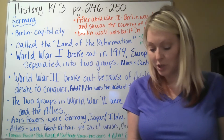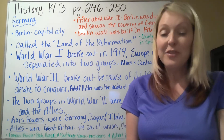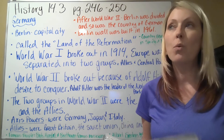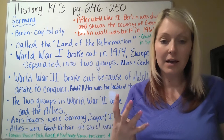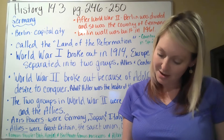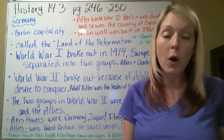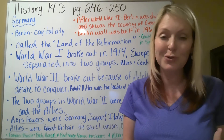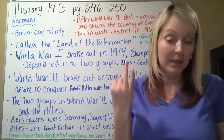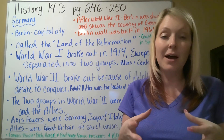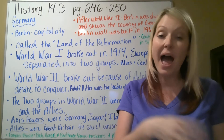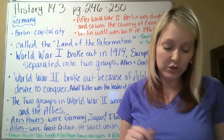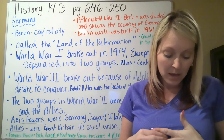An interesting fact about Germany: the Black Forest is a forest in Germany, and it was the imaginary home setting for some famous children's stories — Hansel and Gretel, Little Red Riding Hood, and Snow White. Those forest stories all came from the Black Forest in Germany, written by the German brothers Jacob and Wilhelm Grimm.